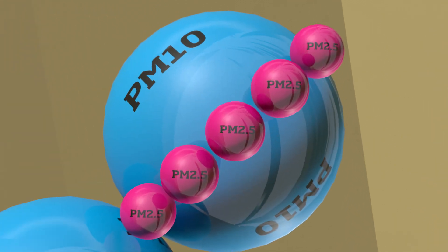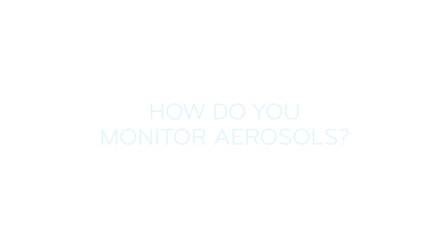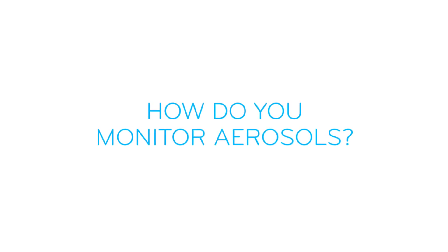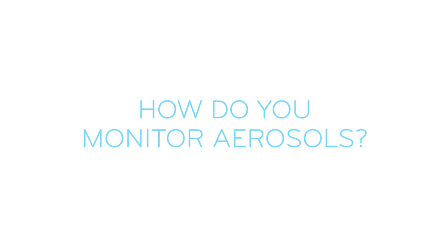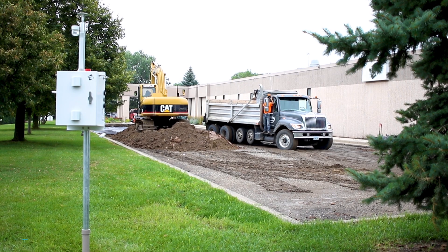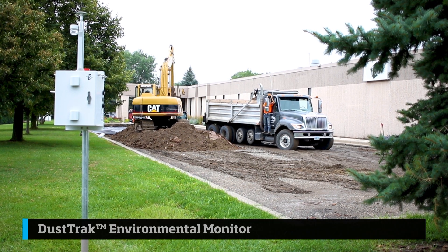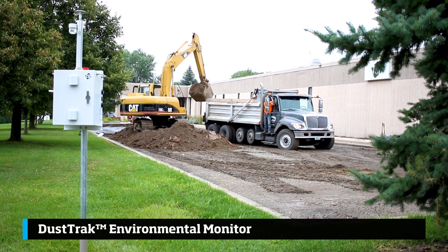This image illustrates just how small PM10 and PM2.5 particles actually are compared to a strand of human hair. How do you monitor aerosols? One method for monitoring aerosols and particulate matter is by using what is called a light scattering laser photometer.